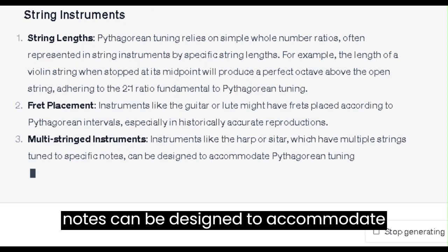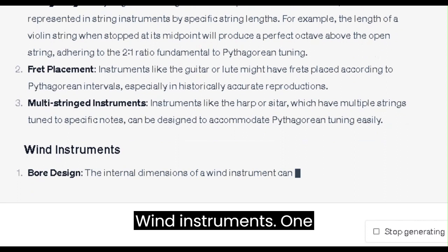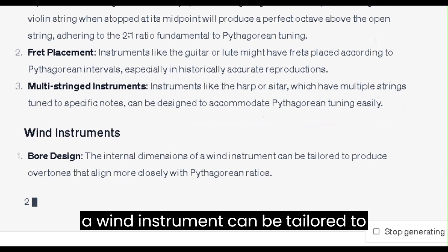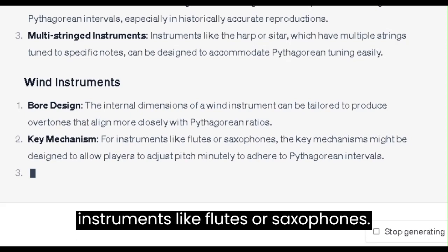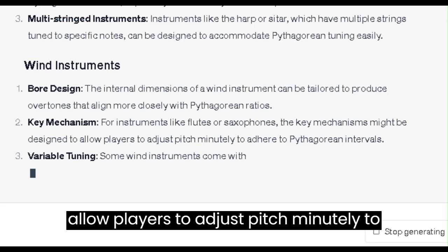Wind Instruments: 1. Bore Design. The internal dimensions of a wind instrument can be tailored to produce overtones that align more closely with Pythagorean ratios. 2. Key Mechanism. For instruments like flutes or saxophones, the key mechanisms might be designed to allow players to adjust pitch minutely to adhere to Pythagorean intervals.